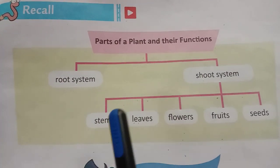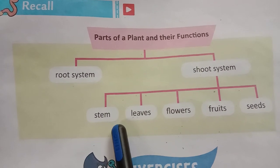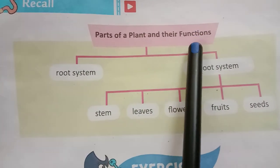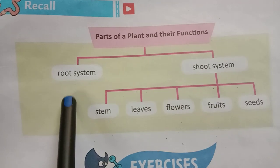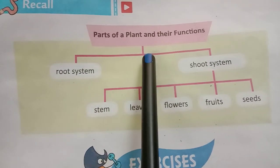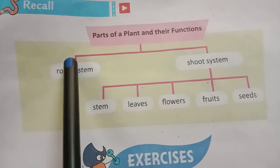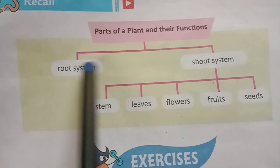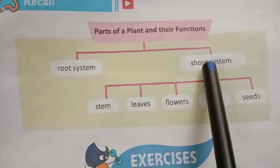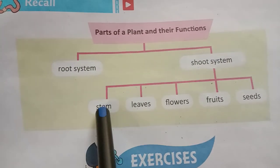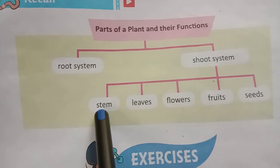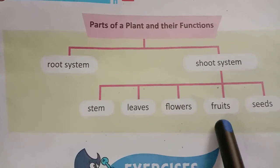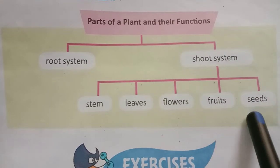So students, we have completed this chapter — parts of a plant and their functions. Let's recall it. Plants are divided into two systems: root system and shoot system. The shoot system is divided into five parts: stem, leaves, flowers, fruits and seeds.